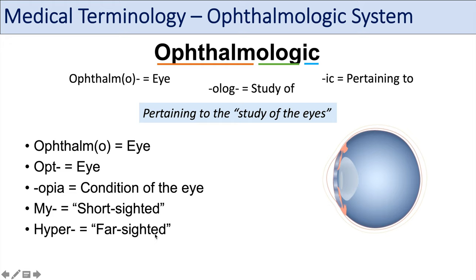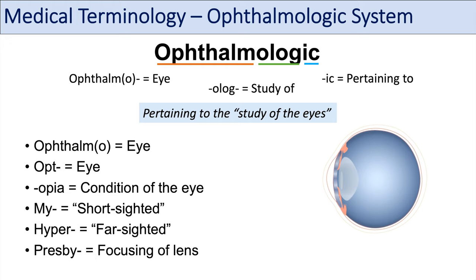The prefix hyper usually means above or high, but with regards to the ophthalmologic system, it really means farsighted. And then the prefix presby refers to focusing of the lens. So hyperopia is the condition of being farsighted. Presbyopia refers to a condition involving an issue with the lens. You can see conditions that we use the suffix opia with some of these prefixes.